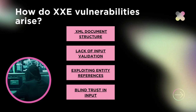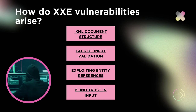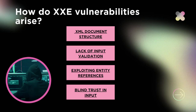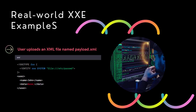Then we have exploiting entity references. Attackers include specially crafted external entity references in the XML input. These references can be used to trigger actions such as reading local files, making network requests, or performing other unintended operations. And lastly, blind trust in input — the vulnerable application blindly processes the XML input and resolves the included external entity references without proper safeguards.